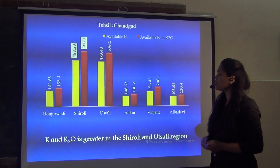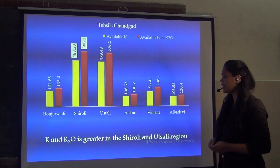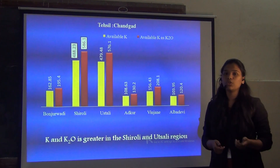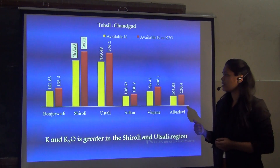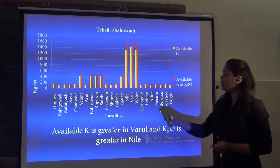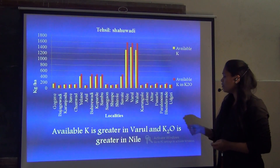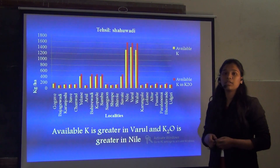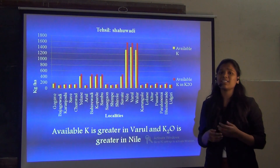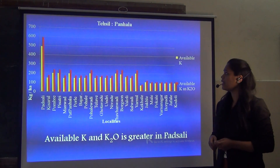From Tessit Chhwadi, the available Potassium is greater in the Bahrol region while the available Potassium as Potassium Oxide is greater in the Neary region.